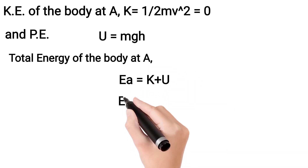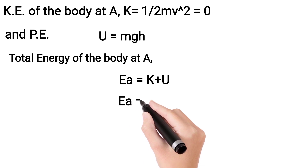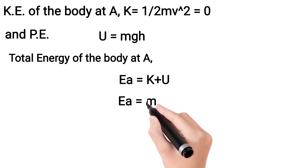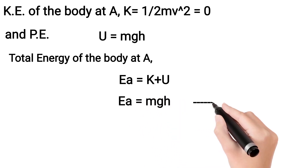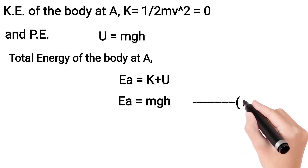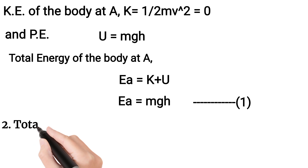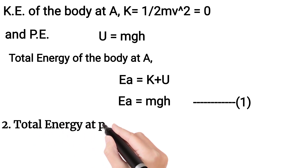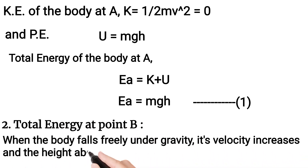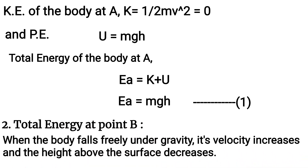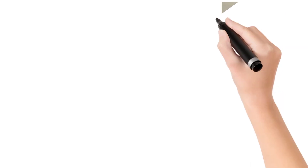And potential energy U is equals to MGH. Total energy of the body at A is equals to the sum of kinetic energy and potential energy, which is: EA is equals to MGH. Now, total energy at point B — when the body falls freely under gravity, its velocity increases and the height above the surface of the earth decreases.